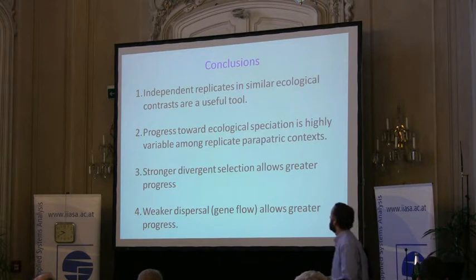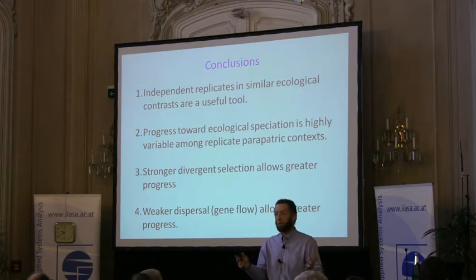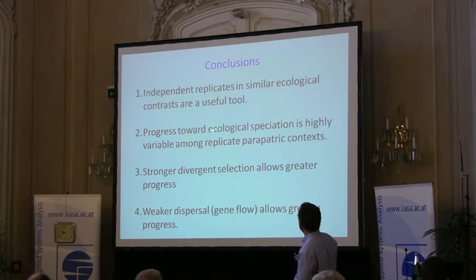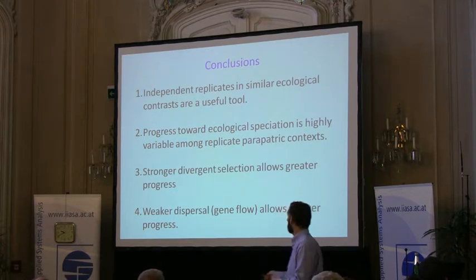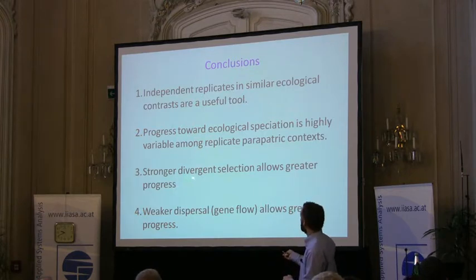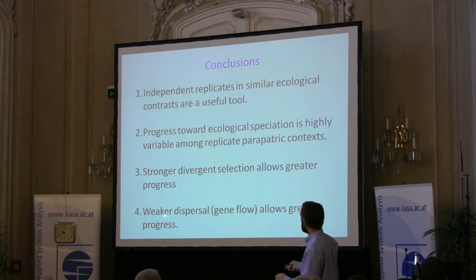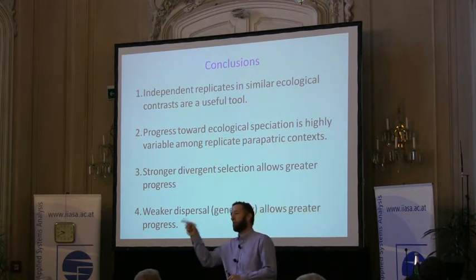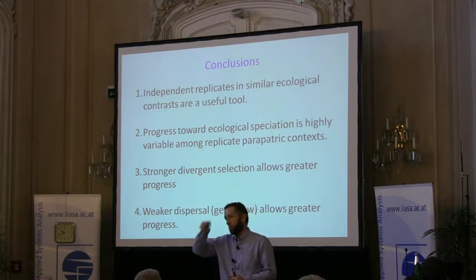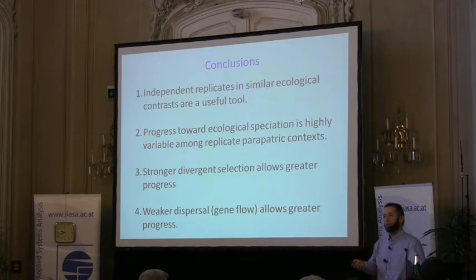In conclusion, independent replicates in similar ecological contrasts are a useful tool, and progress toward ecological speciation is highly variable among these replicate peripatric contexts. Two things seem to explain that variability: stronger divergent selection allows greater progress, and weaker dispersal - therefore lower gene flow - also allows greater progress. There is also a feedback: gene flow decreases as adaptive divergence increases, which is ecological speciation itself. We hope to continue applying this approach to investigate more factors determining progress toward ecological speciation in lake and stream stickleback pairs.